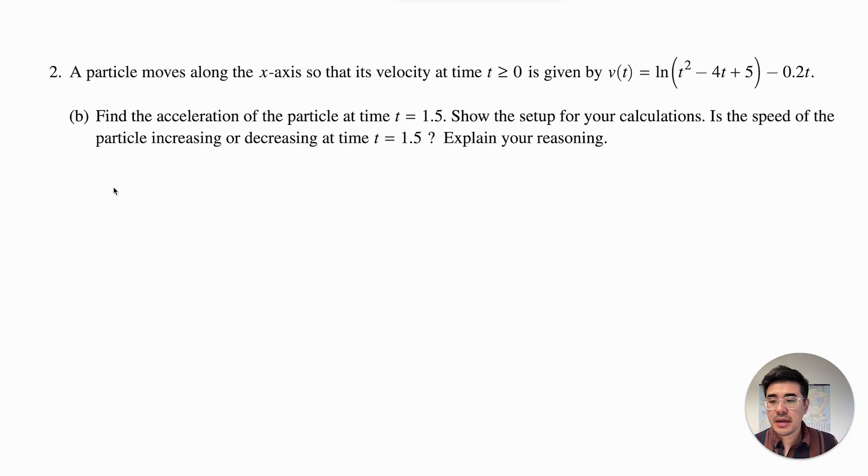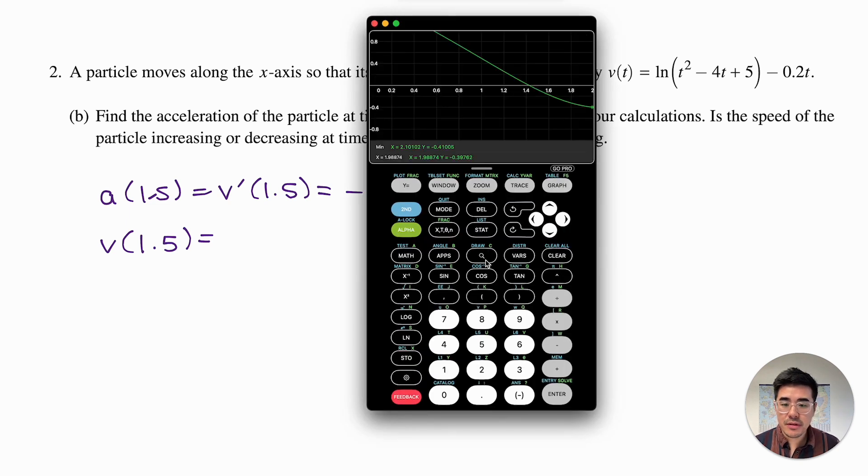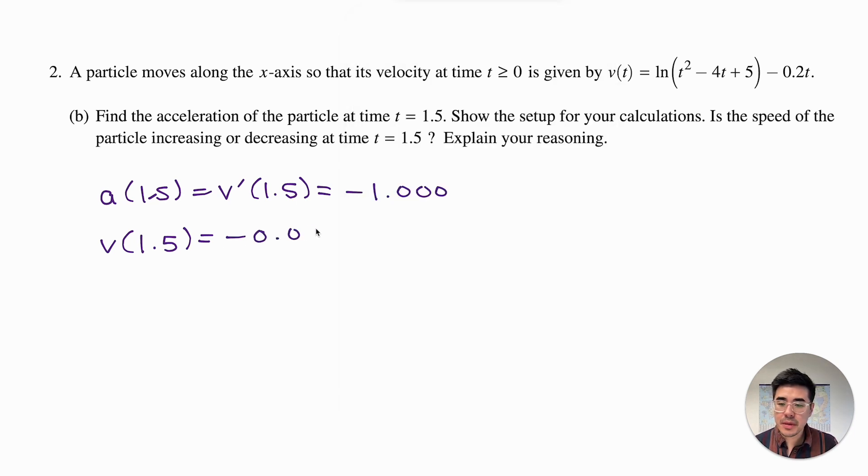How do I show my work then? I can say that a of 1.5 is equal to v prime of 1.5 is equal to negative 1.000, three decimal places. Now is the speed of the particle increasing or decreasing at that time? Remember that speed increasing is when your velocity and acceleration have the same sign, and speed decreasing is when your velocity and acceleration have opposite signs. So we also then need to say v of 1.5 is equal to negative 0.77, three decimal places, which is less than zero. And then a of 1.5 is also less than zero. And so we can write this out using a complete sentence now.